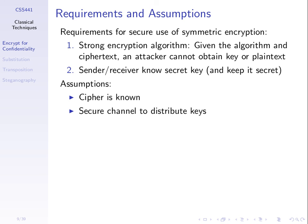In the first technique we'll study, both the sender and receiver use the same key. The sender encrypts using a key, gives that key to the receiver through some other mechanism, and they both know the key while no one else does. Anything encrypted with the key can be decrypted using that same key. If you don't have the key, you cannot decrypt any ciphertext. This is called symmetric key encryption.